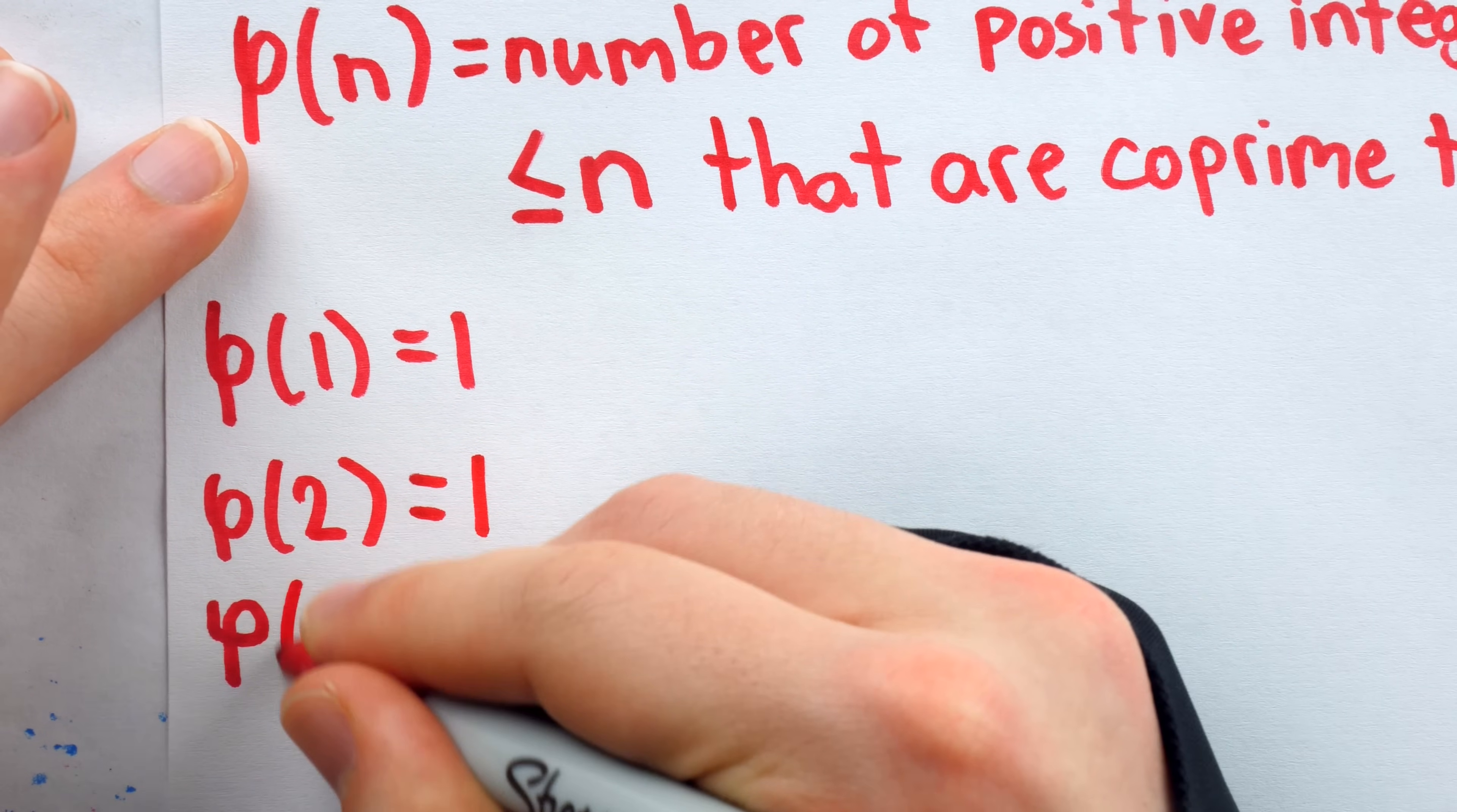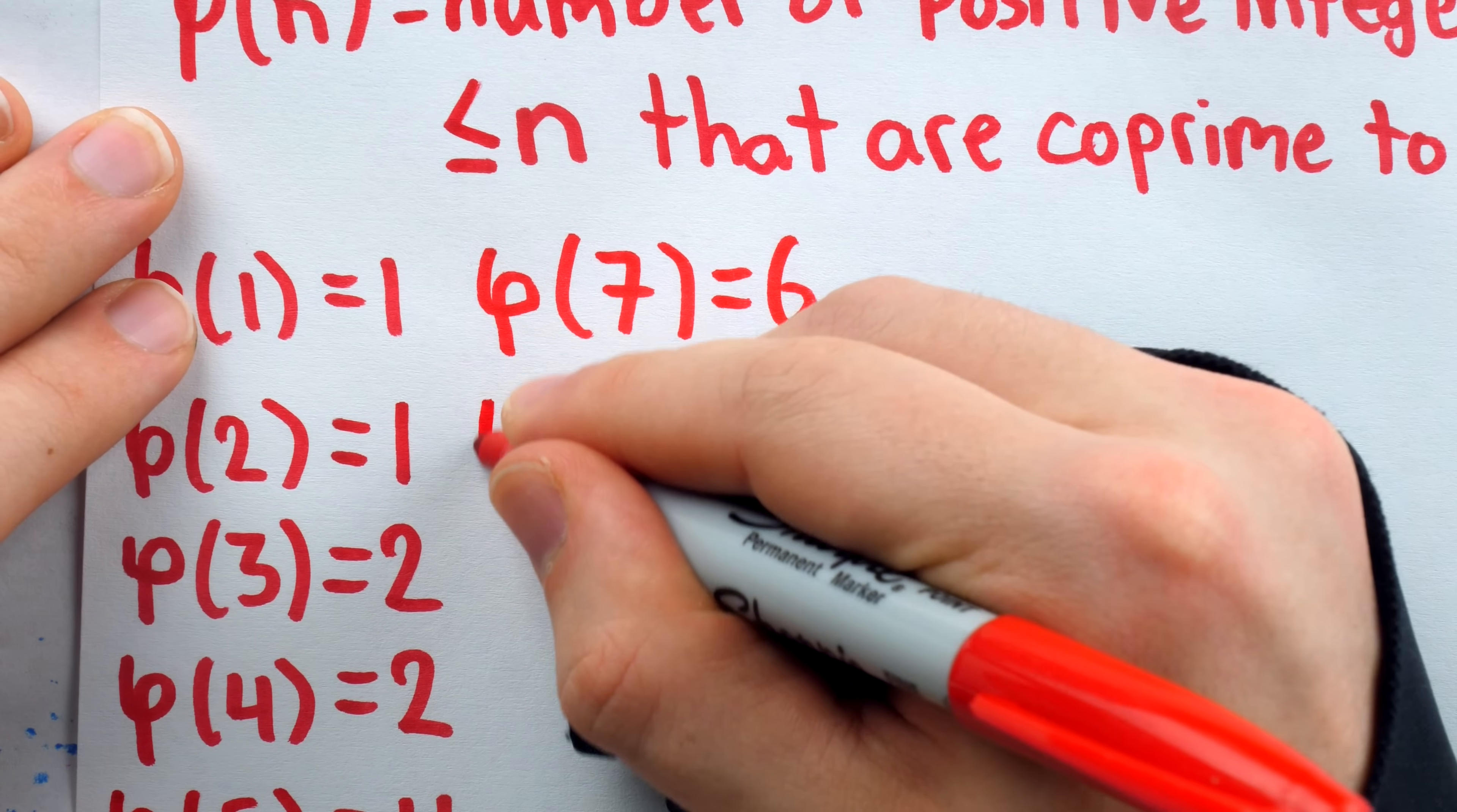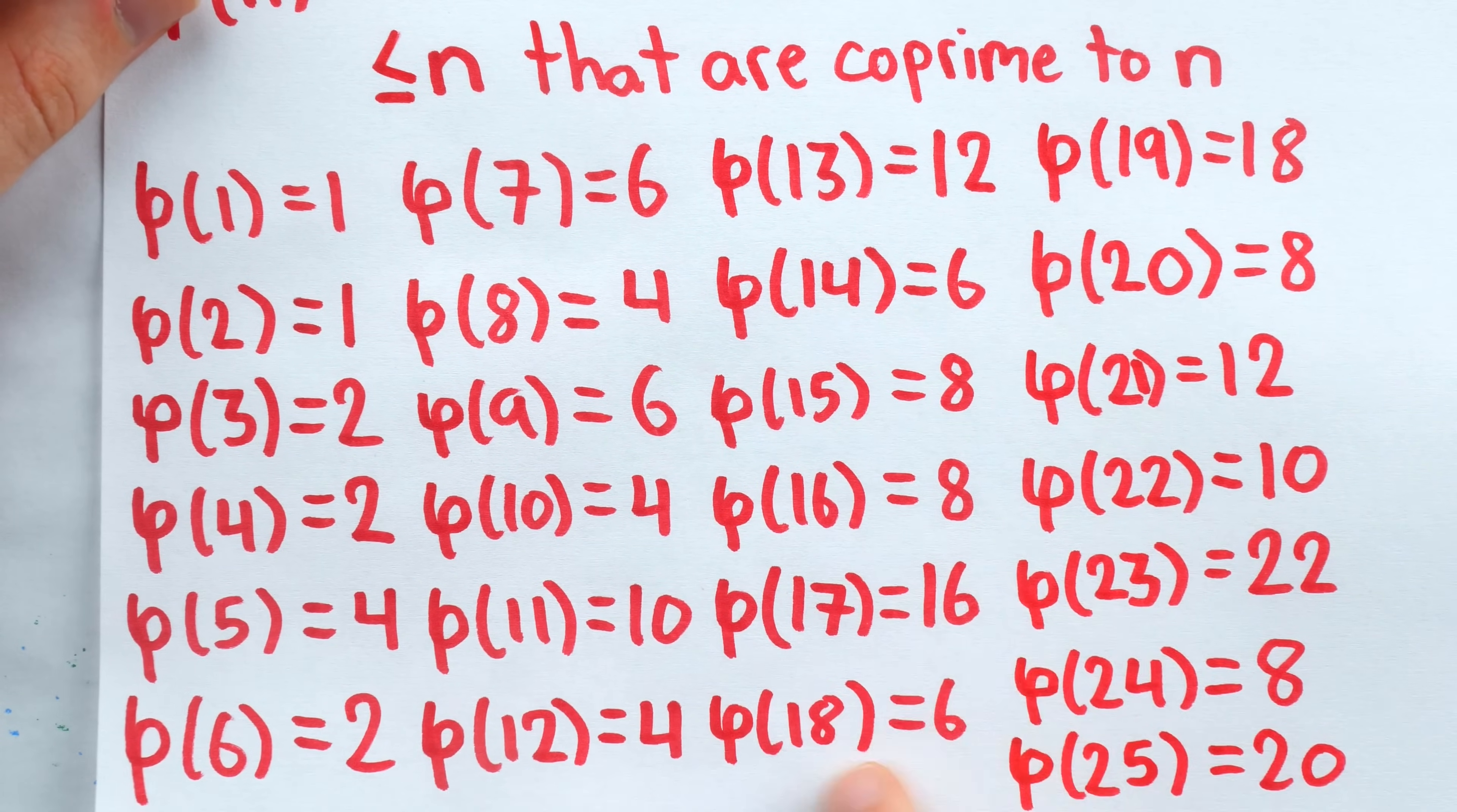Phi of 3. This is equal to 2, because 1 and 2 are positive integers less than or equal to 3, which are co-prime to 3. For another example, there is phi of 4, phi of 5, phi of 6, phi of 7. For one more example, phi of 25 is equal to 20. So that's just a small handful of examples. Do you notice any pattern here? Me neither.